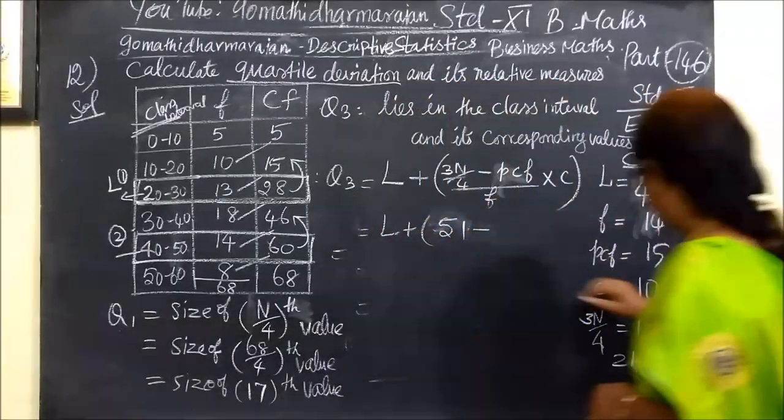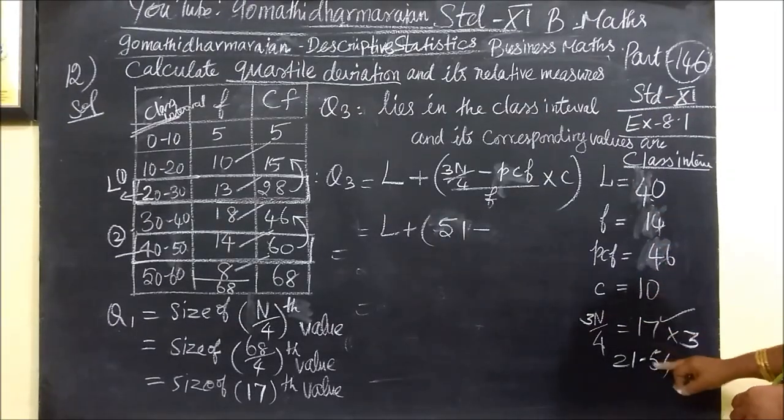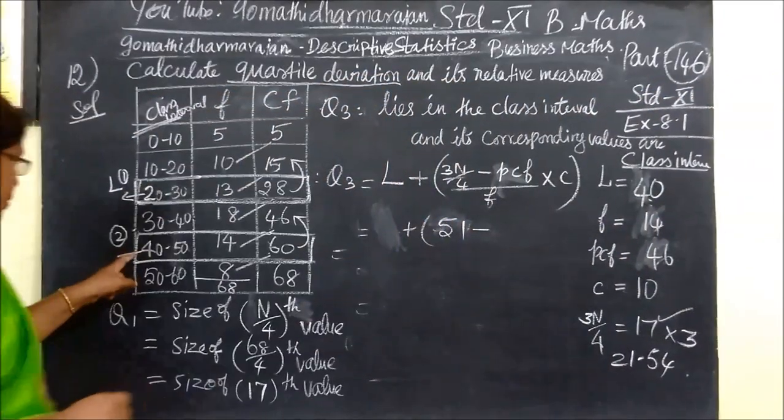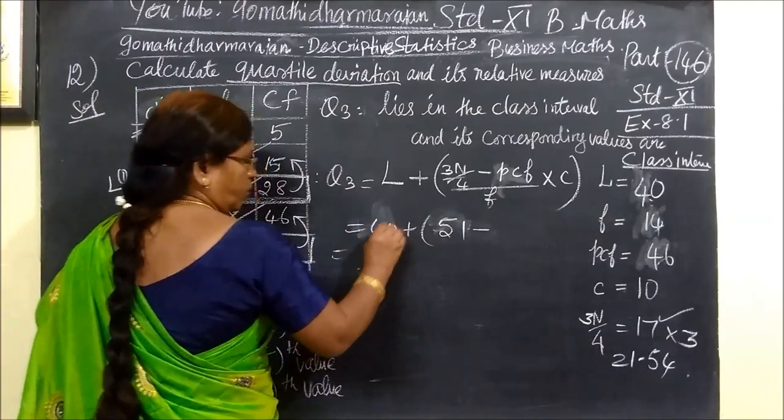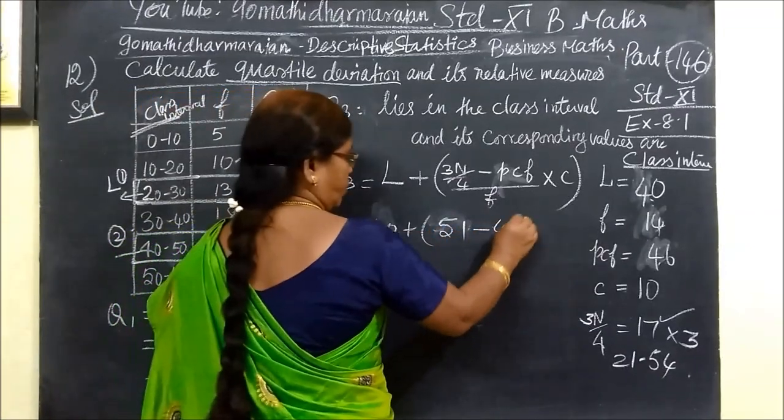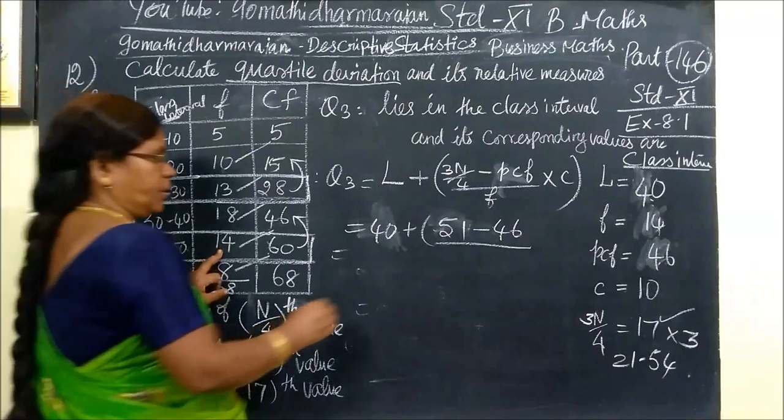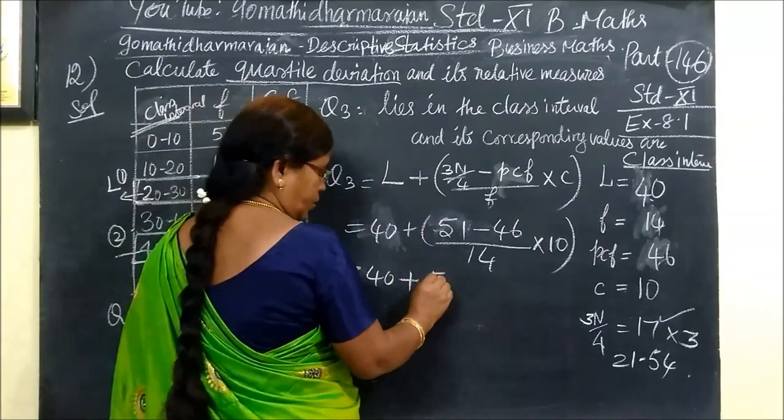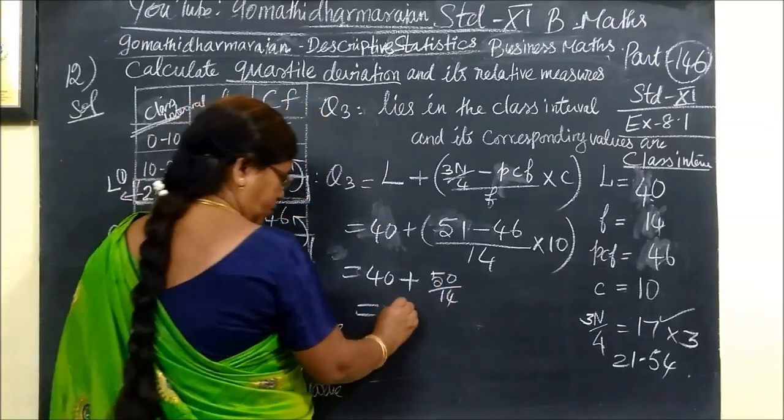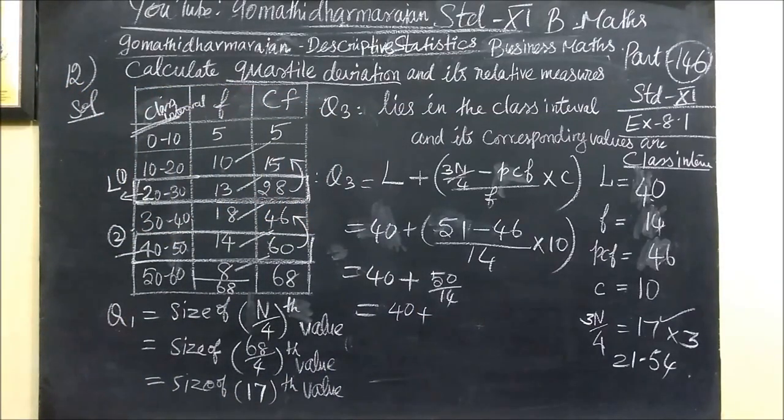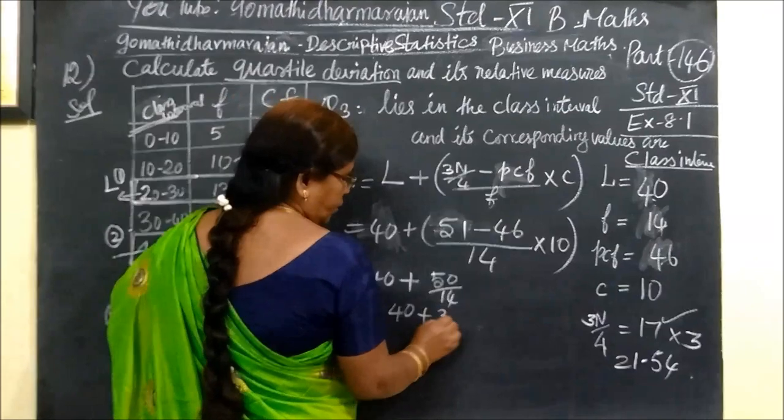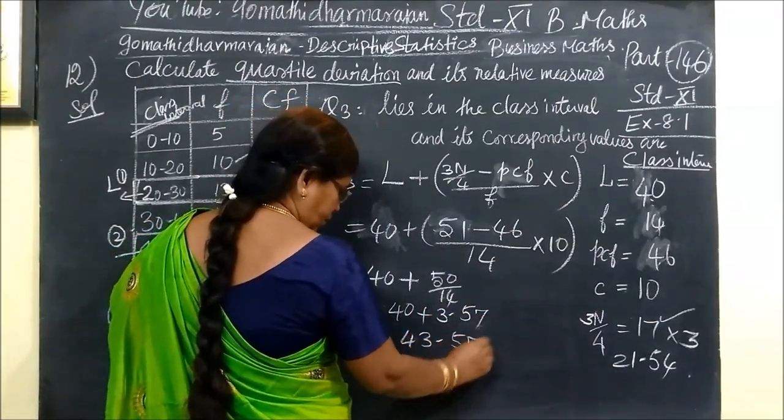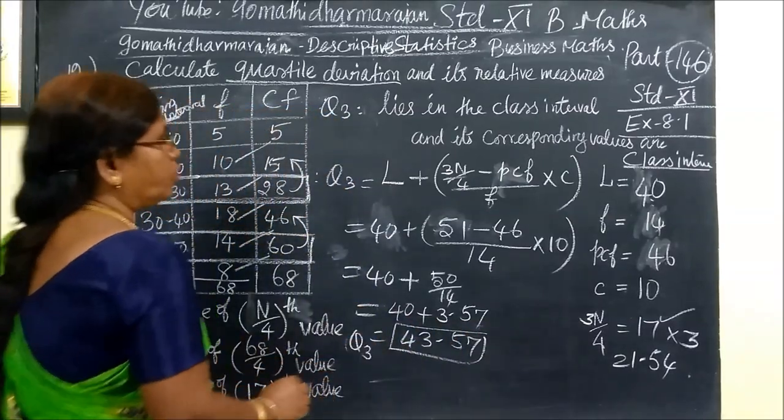Applying the formula: 40 plus (51 minus 46) divided by 14, times 10. This equals 40 plus 50 by 14, which is 40 plus 3.57. Q3 equals 43.57.